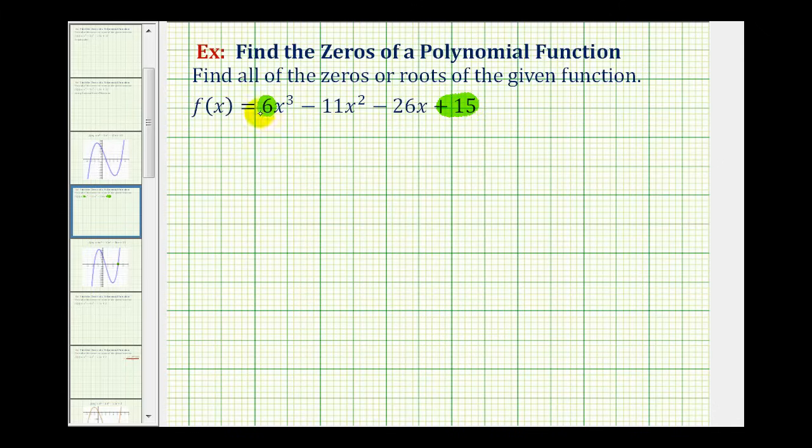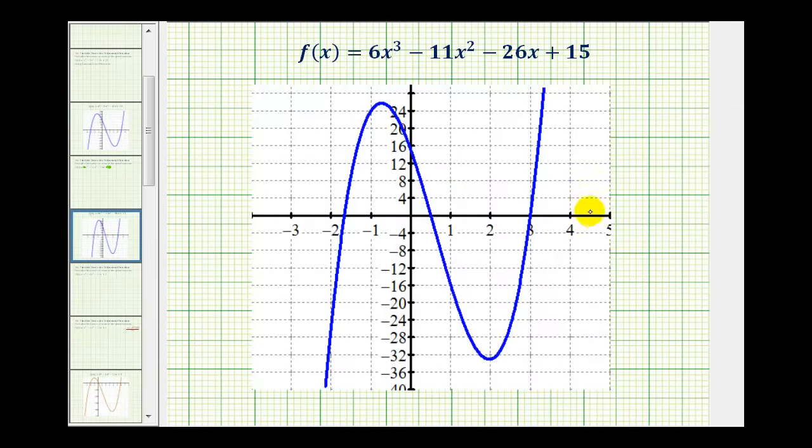But instead of making a long list of possible rational zeros, we're actually going to take a look at the graph of this function to determine our rational zeros. So here's the graph of our function. Since we do have a cubic function, which means it's degree 3, and we have three x-intercepts, this tells us that we do have three real zeros.